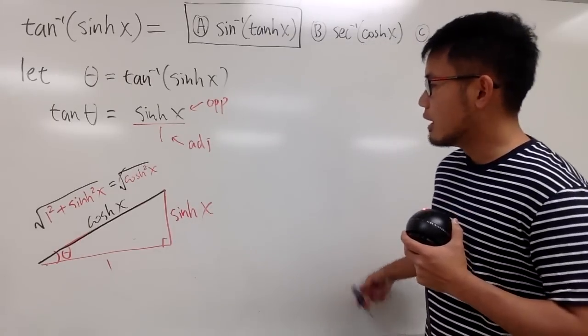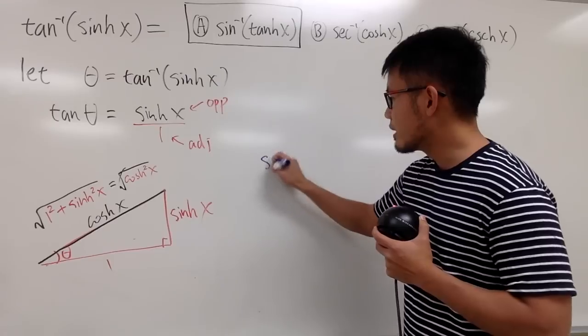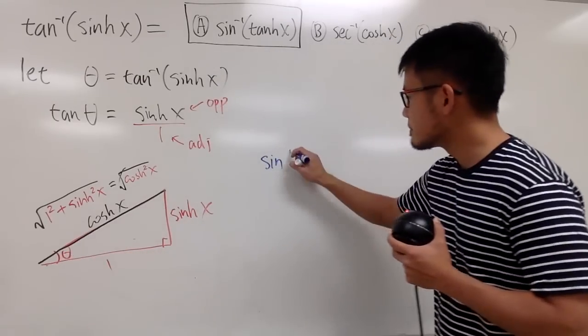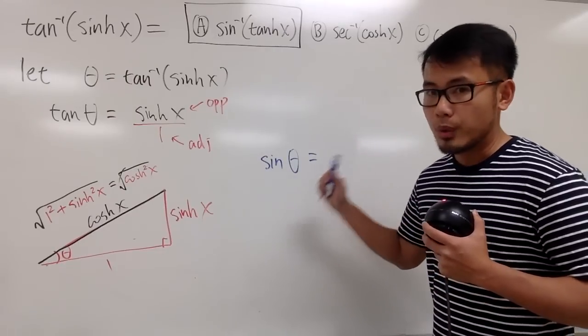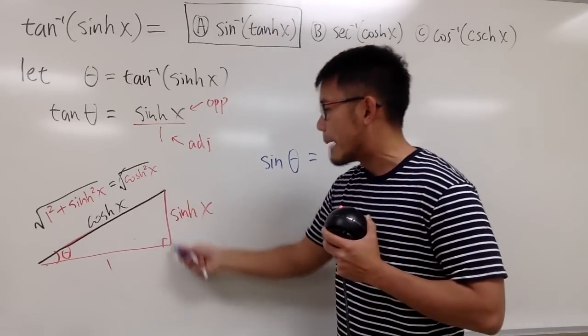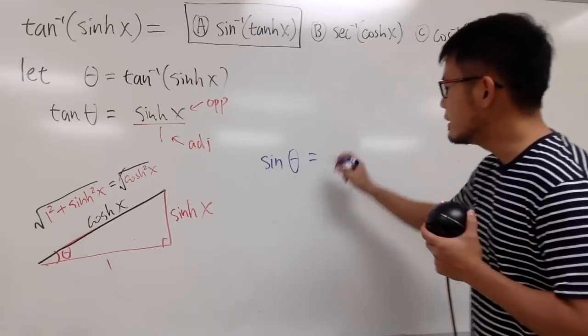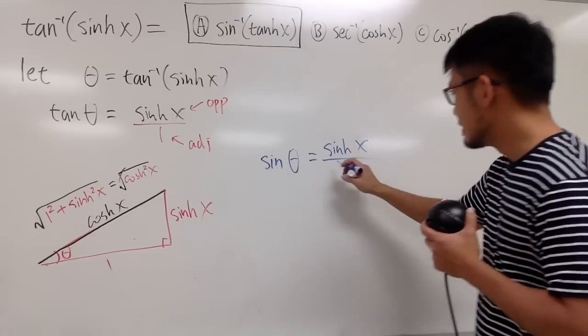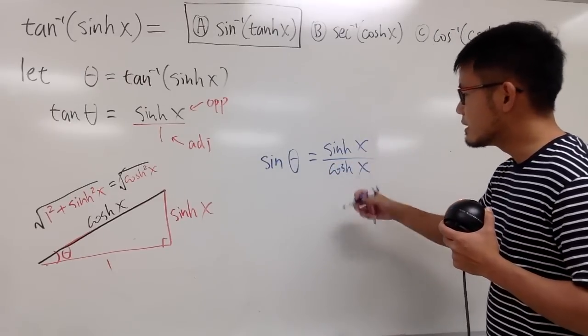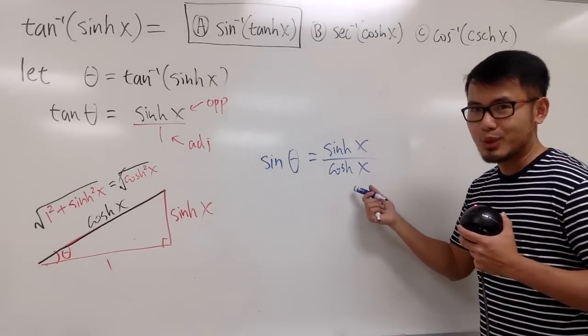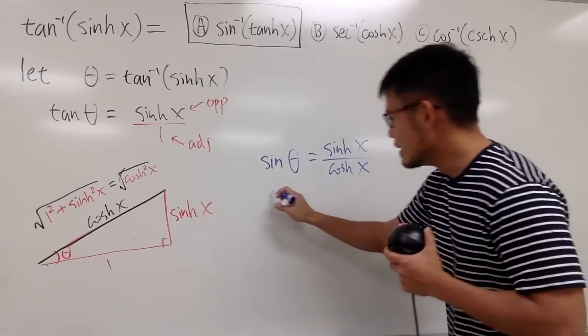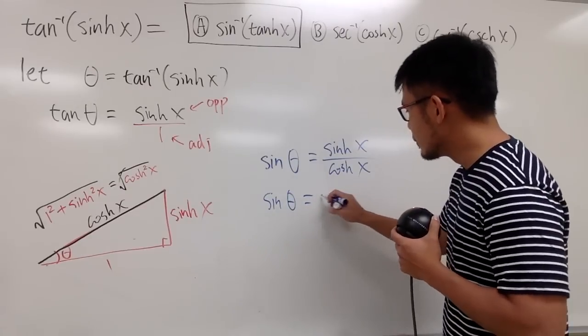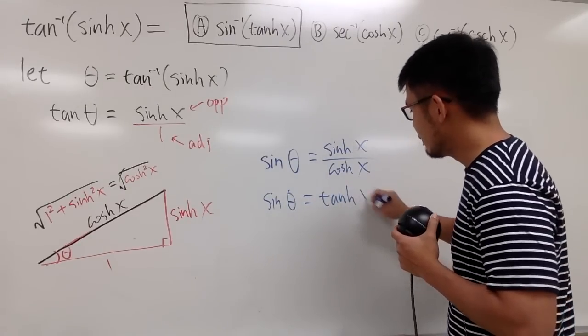So, from this picture, let's go ahead and take the regular sine of this angle theta. Because when we do this, we can call out the opposite over hypotenuse, which is sinh x over cosh x. And the reason I want to do this is because this is equal to what? Just tanh, right? So we know the regular sine of theta is equal to tanh of x.